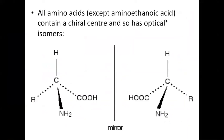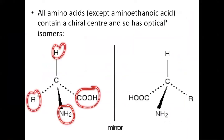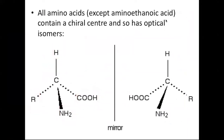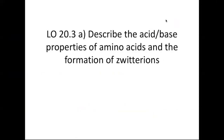Here is an example of an amino acid — you have your amine, your acid, your hydrogen, and then there's your R. All amino acids will be chiral or will have a chiral center except amino ethanoic acid, or what we call glycine. So you would imagine all amino acids existing in two forms. You should already know how to draw the mirror image or the optical isomer when there is a chiral center.